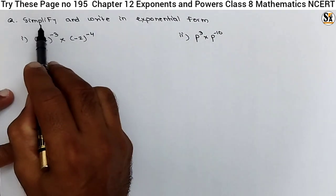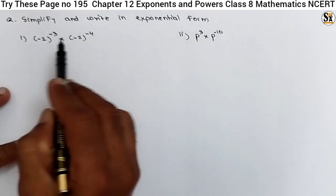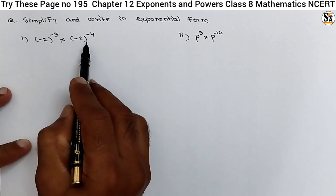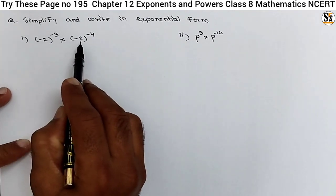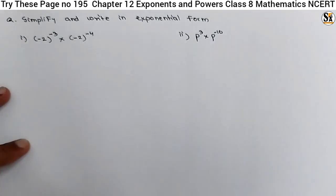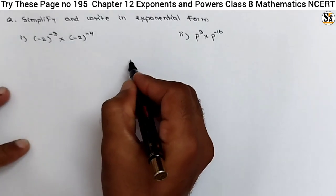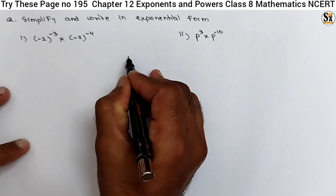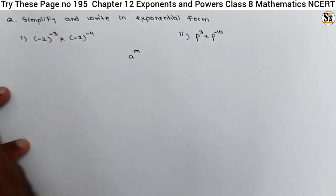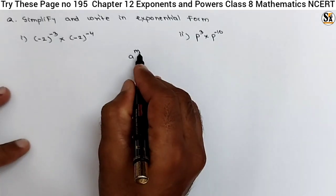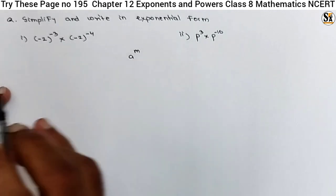The question is given: simplify and write the exponential form. We have to simplify the given examples and write them in exponential form. Exponential form means a raised to m, where a is the base and m is the exponent. In this way we have to write.